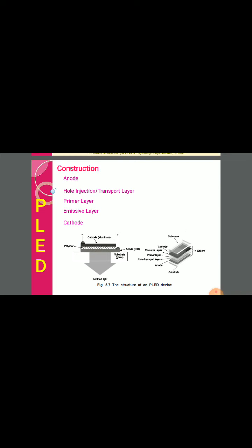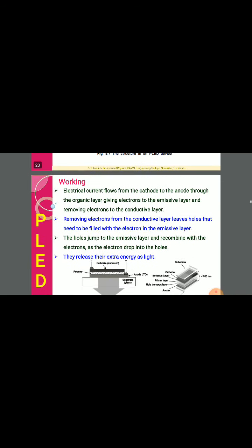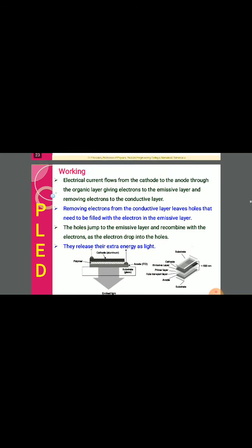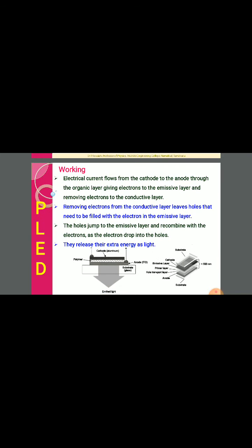The working is almost similar. The electrical current flows from the cathode to the anode through the organic layer, giving electrons to the emissive layer and removing electrons from the conductor layer. Removing electrons from the conductor layer leaves holes that need to be filled with electrons. In the emissive layer, the holes jump to the emissive layer and recombine with the electrons.